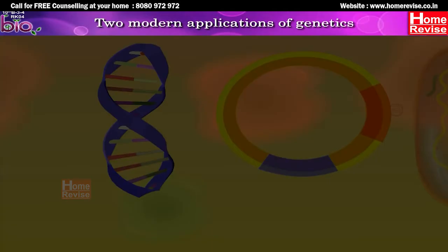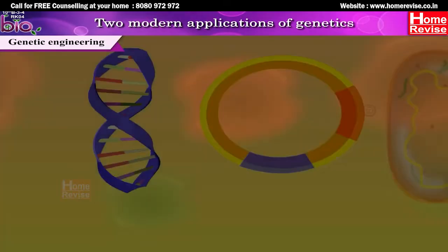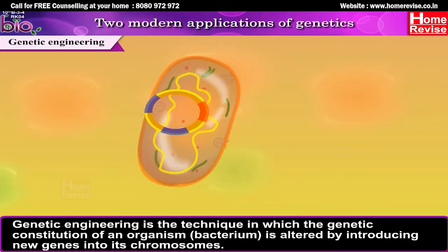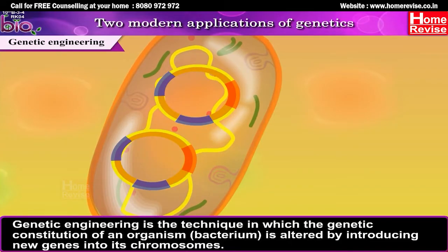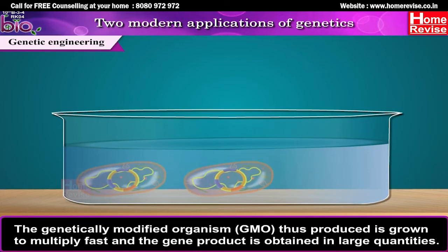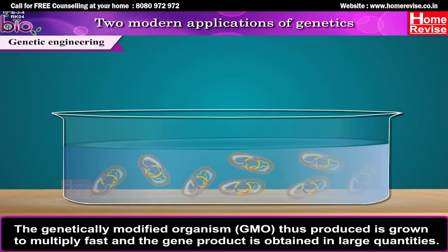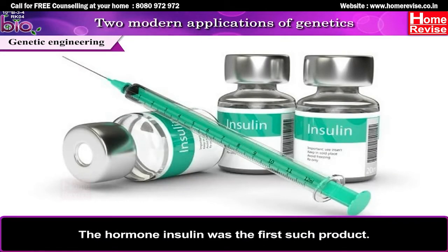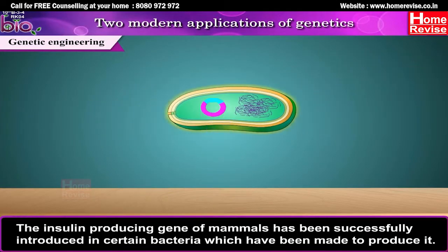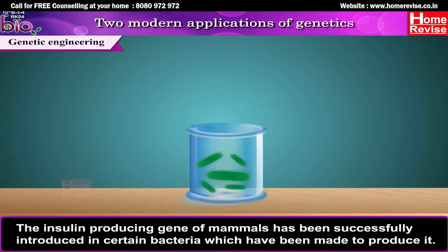Two modern applications of genetics: First, genetic engineering. Genetic engineering is the technique in which the genetic constitution of an organism, like a bacterium, is altered by introducing new genes into its chromosomes. The genetically modified organism, or GMO, thus produced is grown to multiply fast and the gene product is obtained in large quantities. The hormone insulin was the first such product — the insulin-producing gene of mammals has been successfully introduced into certain bacteria, which have been made to produce it.